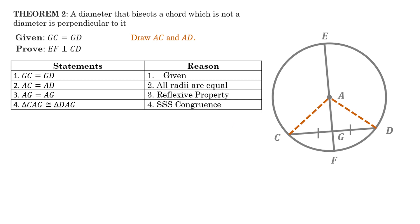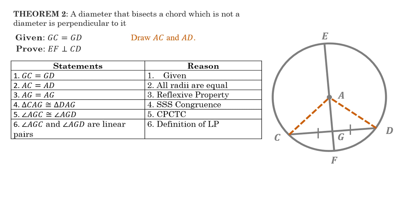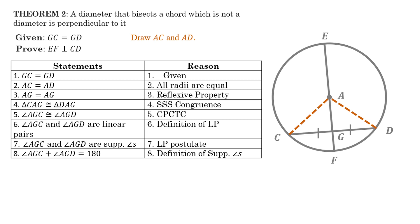Now, angle AGC, which is this angle AGC, is equal to or congruent to angle AGD, the other one. By CPCTC, corresponding parts of congruent triangles are congruent. And angle AGC and angle AGD are linear pairs because they form a line. So when they form a line, they are adjacent to each other and they form a line. And if they form a line, they are supplementary. Their sum is 180 degrees by the definition of supplementary angles.